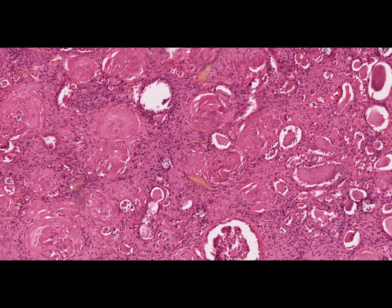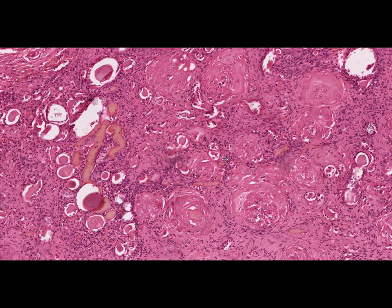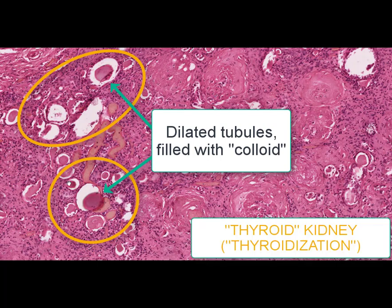As the tubular-interstitial elements are affected primarily, the main changes are found in renal tubules. Most of the tubules in this slide are dilated and filled with homogeneous eosinophilic masses which have the appearance of colloid. The tubular epithelium becomes flat, with atrophy and degenerative and necrobiotic changes. Such microscopical appearance is commonly called thyroidization or thyroid kidney.